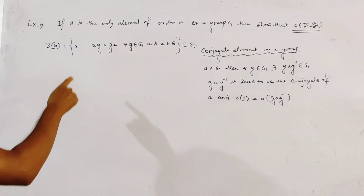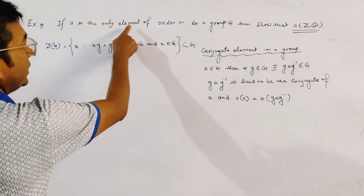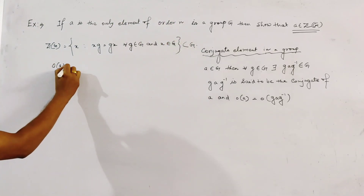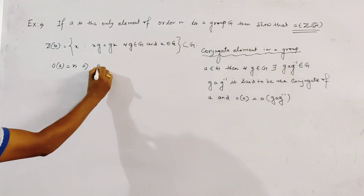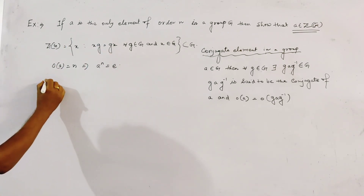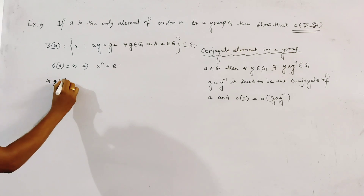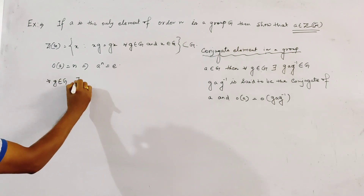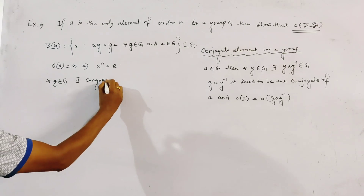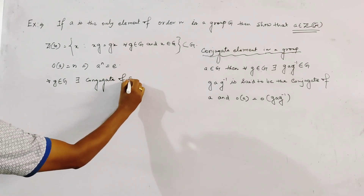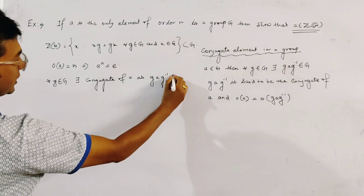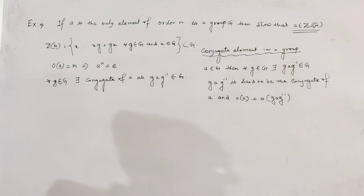It is given that a is the only element of order n in the group — that is, order of a equals n implies a to the power n equals e. So for all g in G, there exists a conjugate of a, namely g·a·g⁻¹, which also belongs to G.